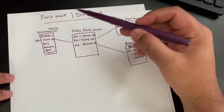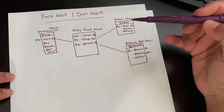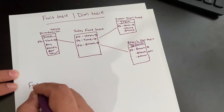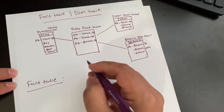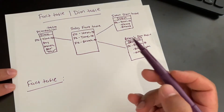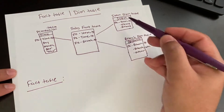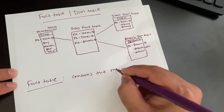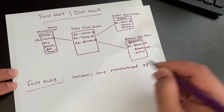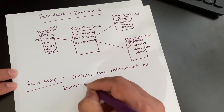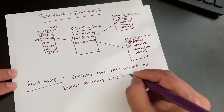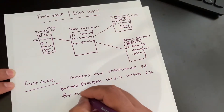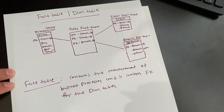Hello friends, today we're going to see what is a fact table and dimension table. The fact table contains measurement of business processes and it contains foreign keys for the dimension table.